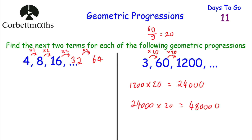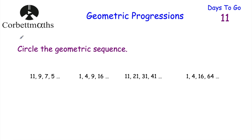The next question asks us to circle the geometric sequence from four given sequences. The first one: 11, 9, 7, 5 — we're going down by 2 each time, so that's a linear sequence, not geometric. The second one: 1, 4, 9, 16 — those are square numbers, a quadratic sequence. The differences go up by 3, 5, 7, with second differences of 2. So that's not geometric either.